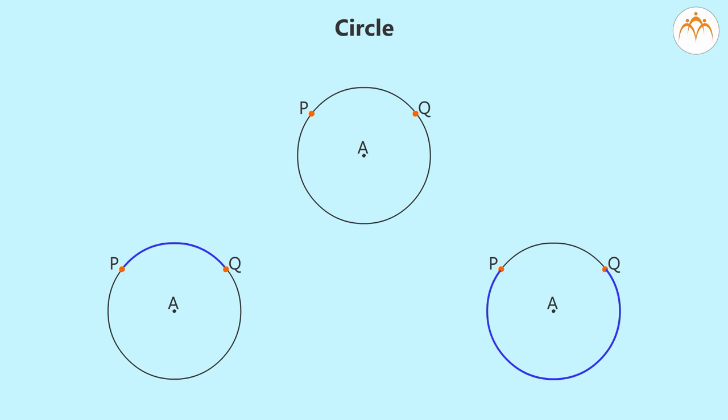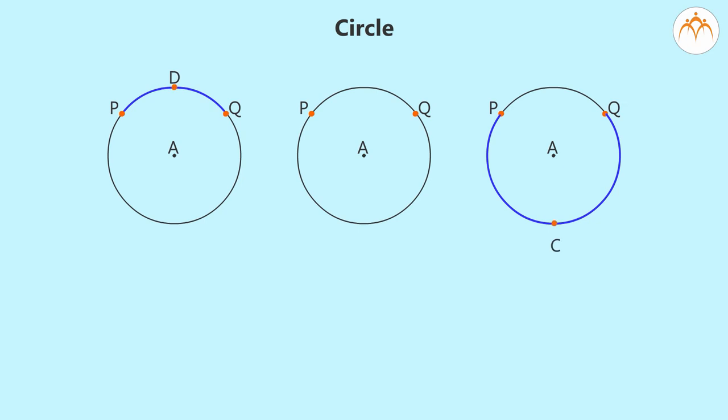To resolve this, we take one more point on arc and represent the arc by using these three points. For example, we will call this arc as arc PDQ and we will call this arc as arc PCQ. Isn't this simpler?